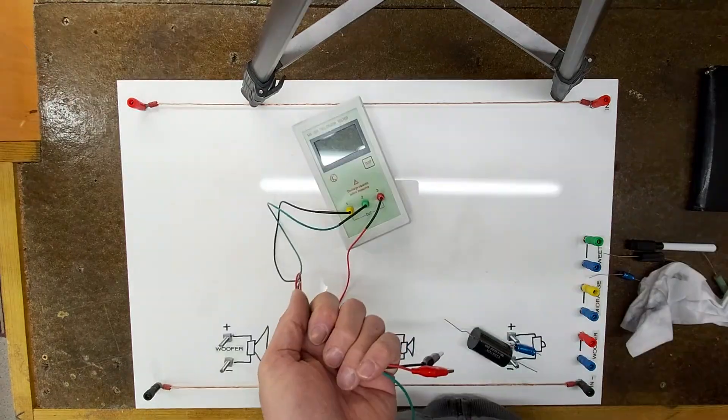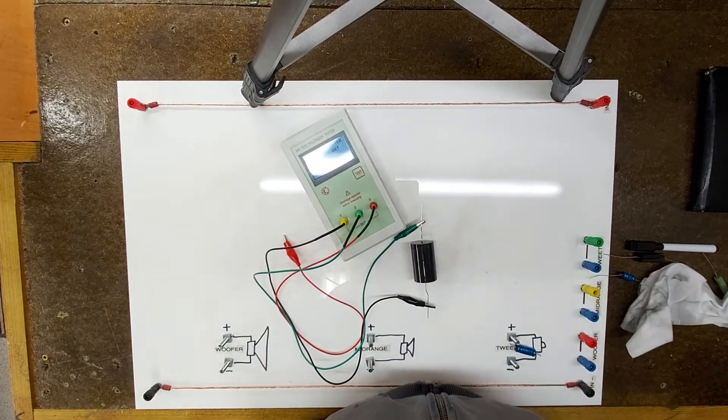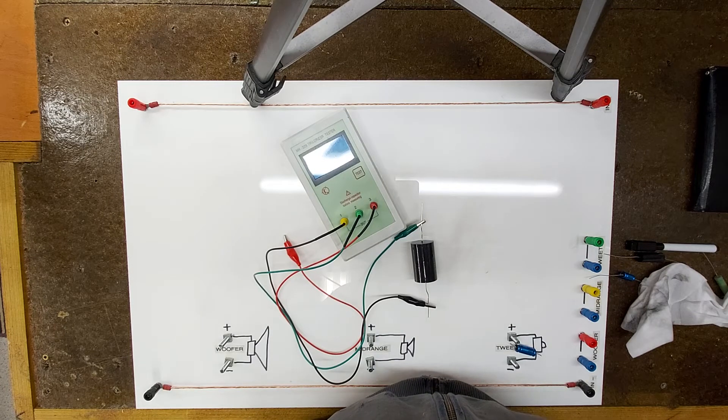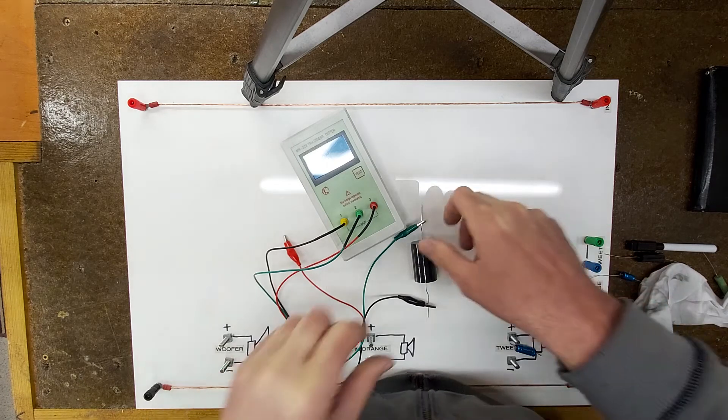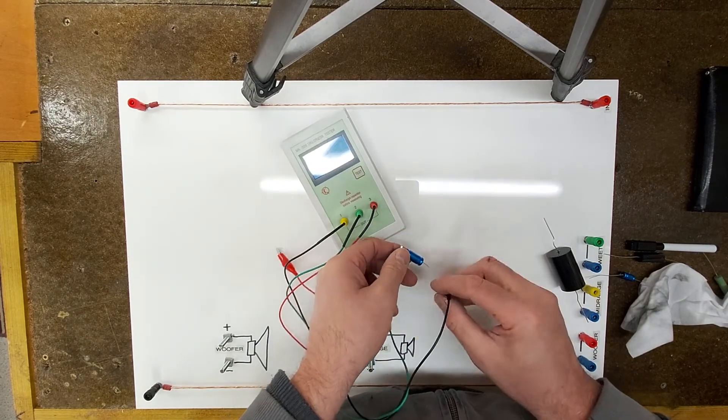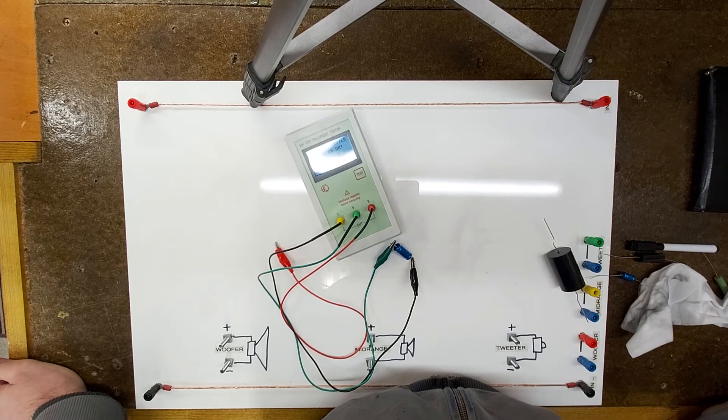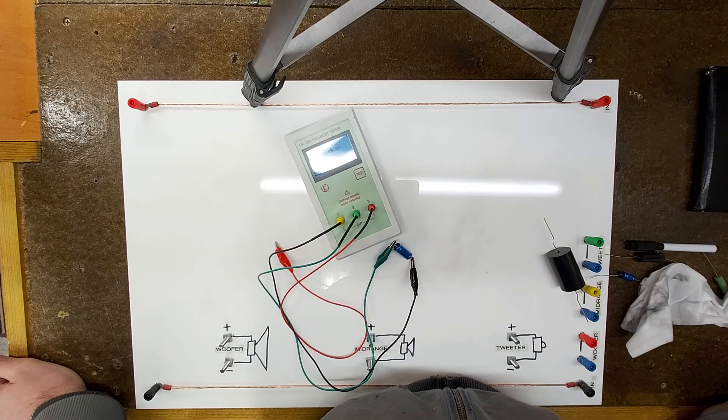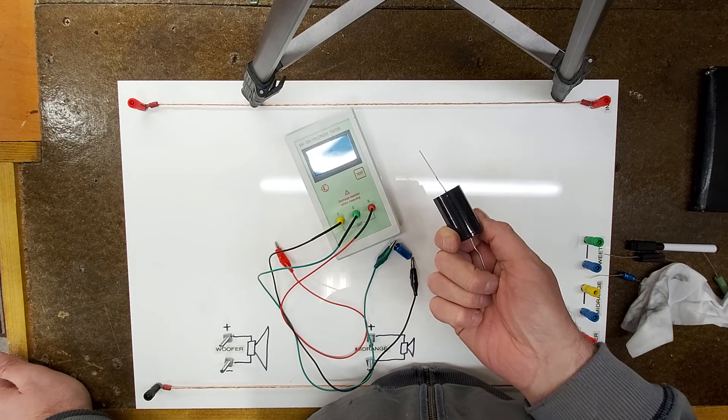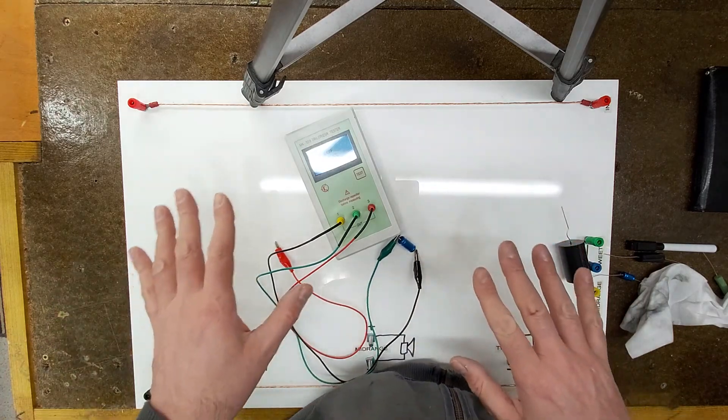So just to look at some larger values, this is a 21 microfarad polypropylene cap, and its ESR is 0.06 ohms. If I look at the electrolytic version, we get 0.21. This would probably be found on a mid-range circuit. In circuit that's going to make that mid play slightly louder, so you might end up adding a half ohm resistor. In the tweeter circuit that could be as much as an ohm.